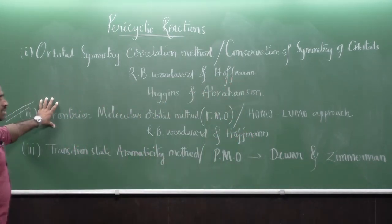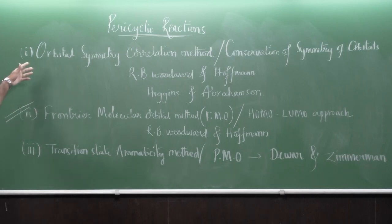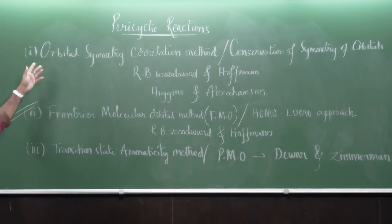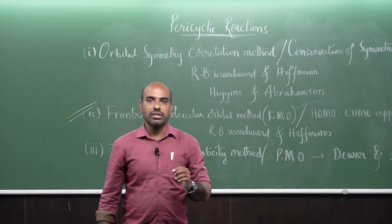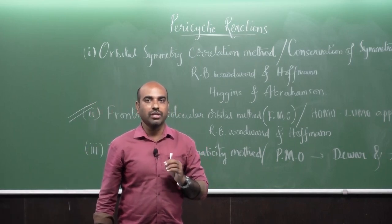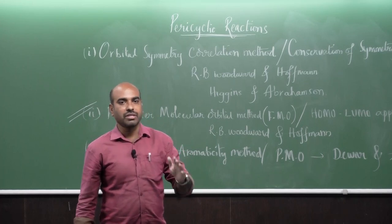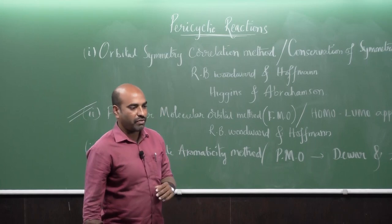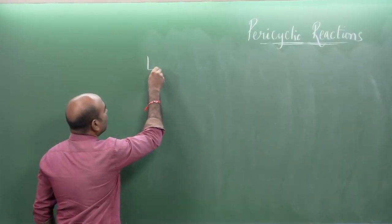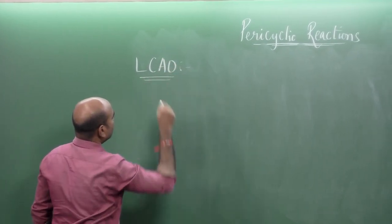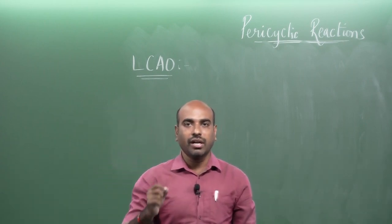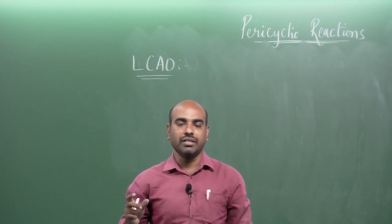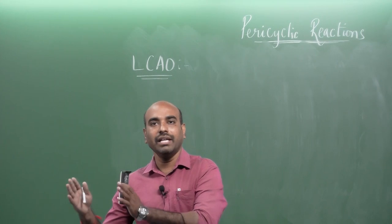Since FMO is the most popular and easiest method, to analyze pericyclic reactions using any of these three methods, one must have thorough knowledge of molecular orbitals and their symmetry properties. We will start with the LCAO method — linear combination of atomic orbitals — to gain insights into molecular orbitals.